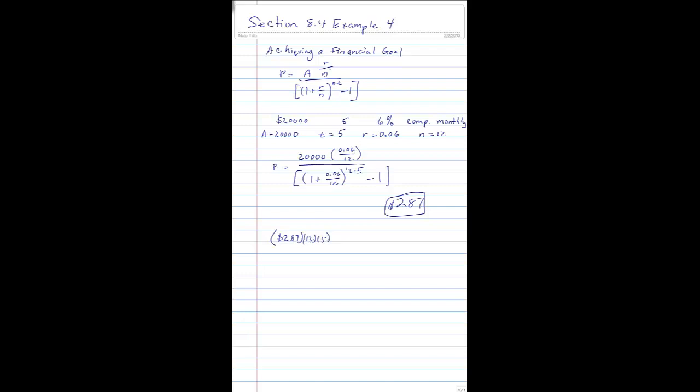that's 287 times 12 times 5, which works out to be $17,220. Well, if my deposit was $20,000,